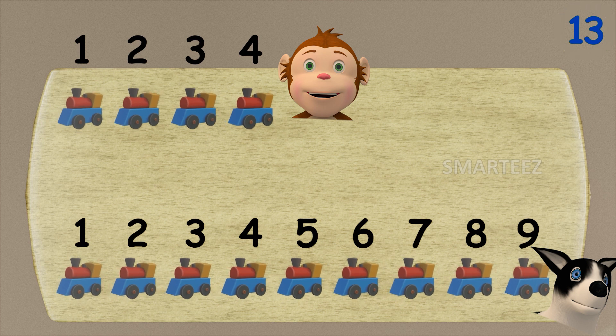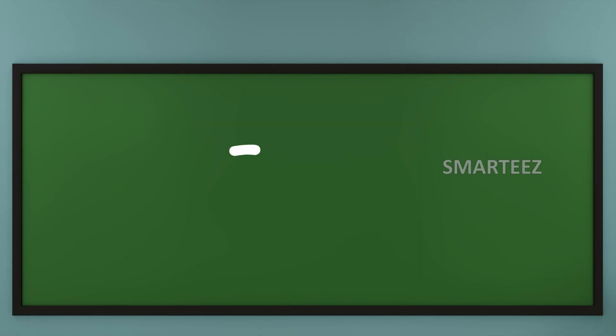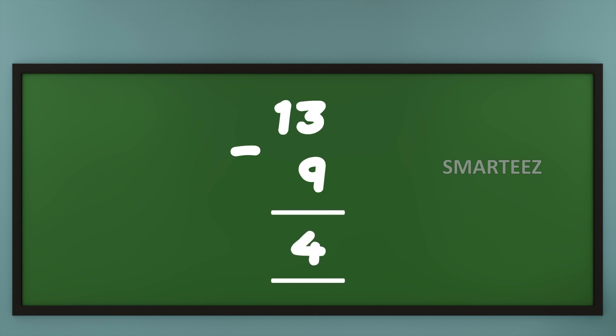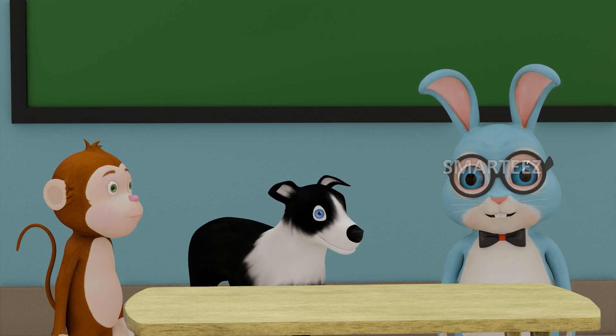This is what we call a subtraction. Here we say when we subtract nine from a total of thirteen, we get four remaining. Removing or reducing is called subtraction. Let's do another one.